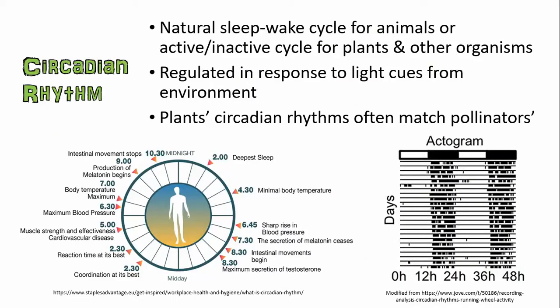All organisms have some sort of circadian rhythm, which is the natural sleep-wake cycle, or in other organisms, the active-inactive cycle. This is regulated by light cues, although most organisms have an innate or internal circadian rhythm, which you can see if you track the activity of an organism when you put them in complete darkness or complete light. They've actually done experiments like that with humans as well as animals.